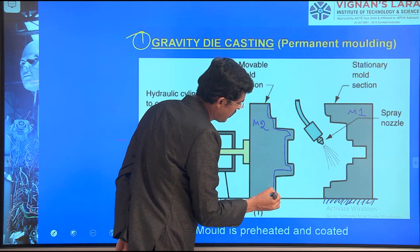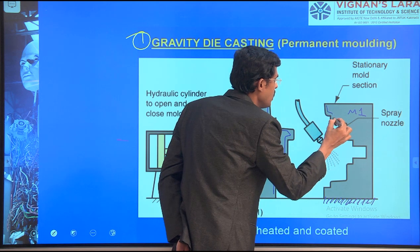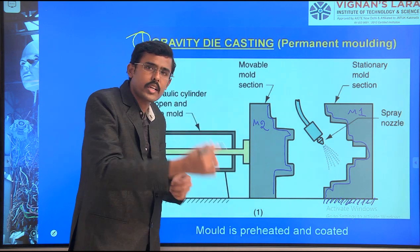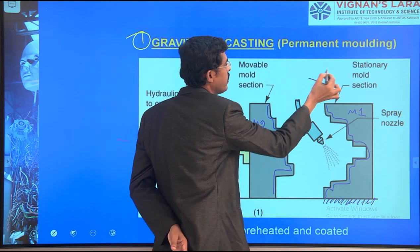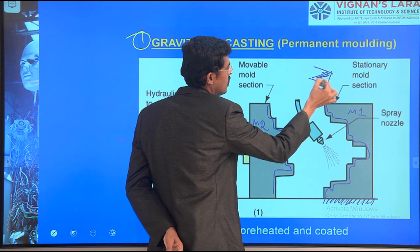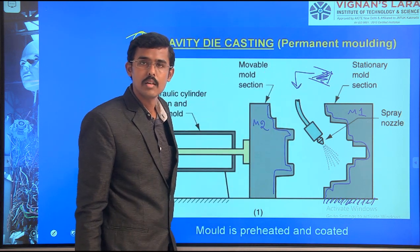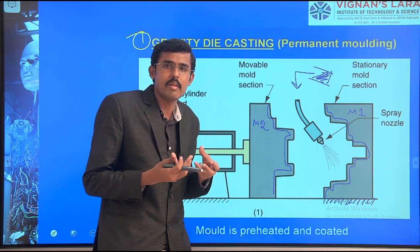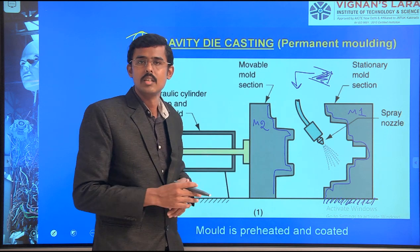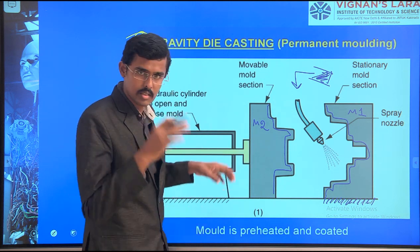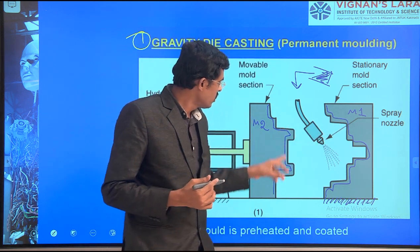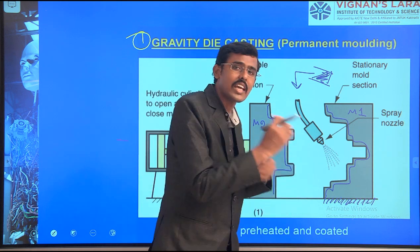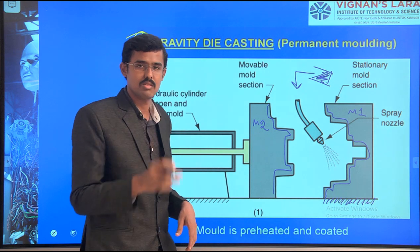As per our need and interest, the design in between can be made according to what product we are making. For every product cycle, we pour the molten material here. Due to gravity it comes down and fills this cavity. When solidified, it becomes a product. A spray nozzle is used every time for cleaning impurities and waste particles that are deposited during each cyclic change. The setup includes spray nozzle, stationary mold section, movable mold section, and hydraulic cylinder for open and close.